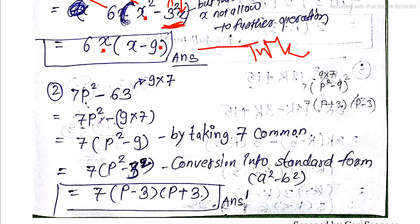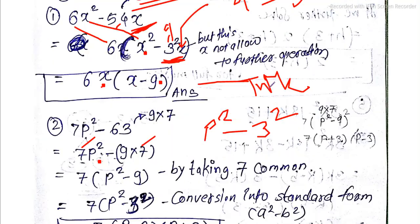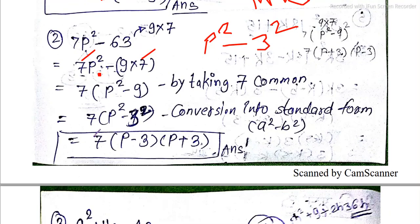What is question number 2? This is a problem: 9 into 7 is 63 and 7 is common. So we have 7 common, and p² minus 9 is p² minus 3². Applying a² minus b² formula gives 7 into (p minus 3)(p plus 3). This is your right answer.